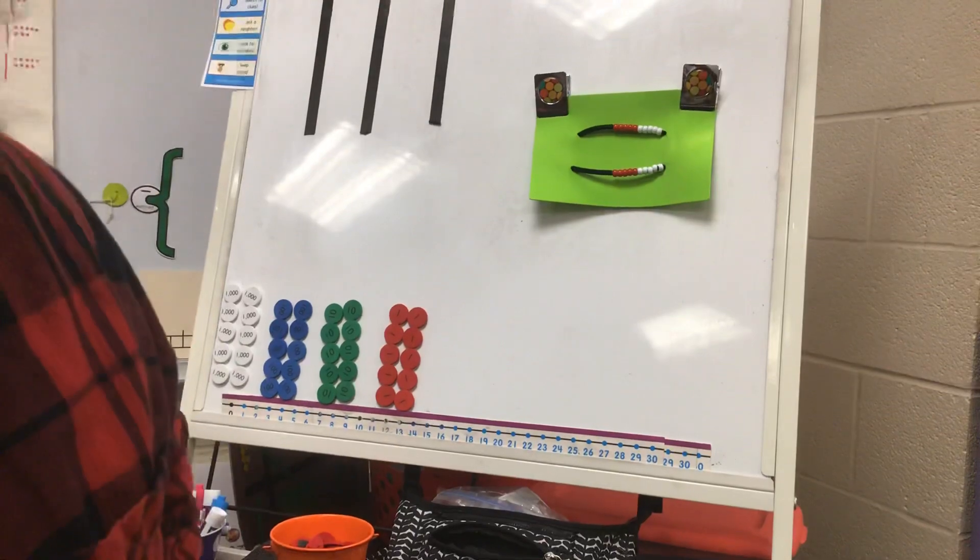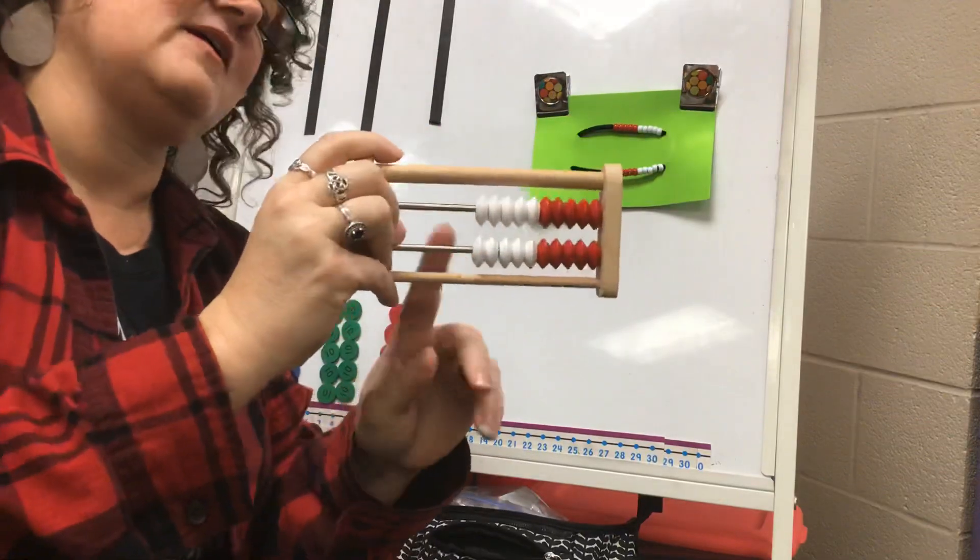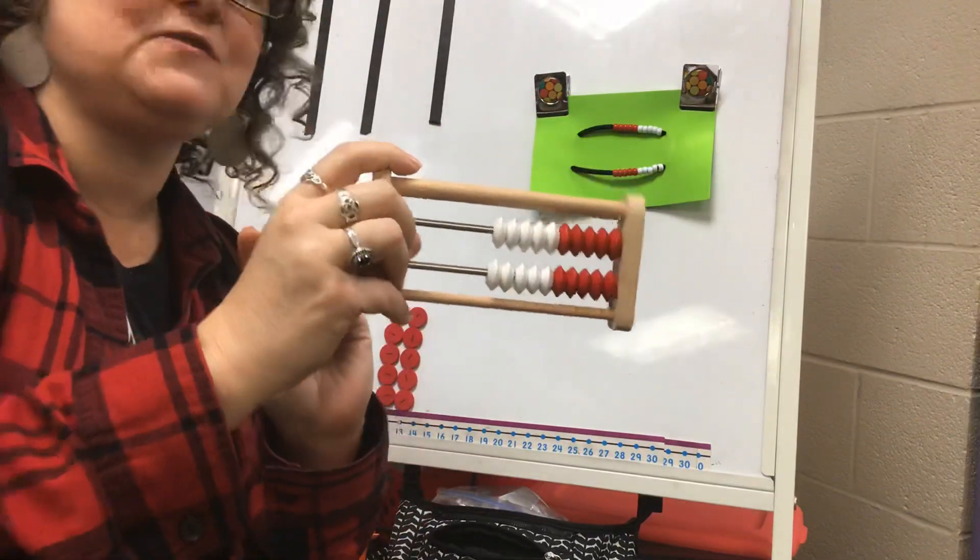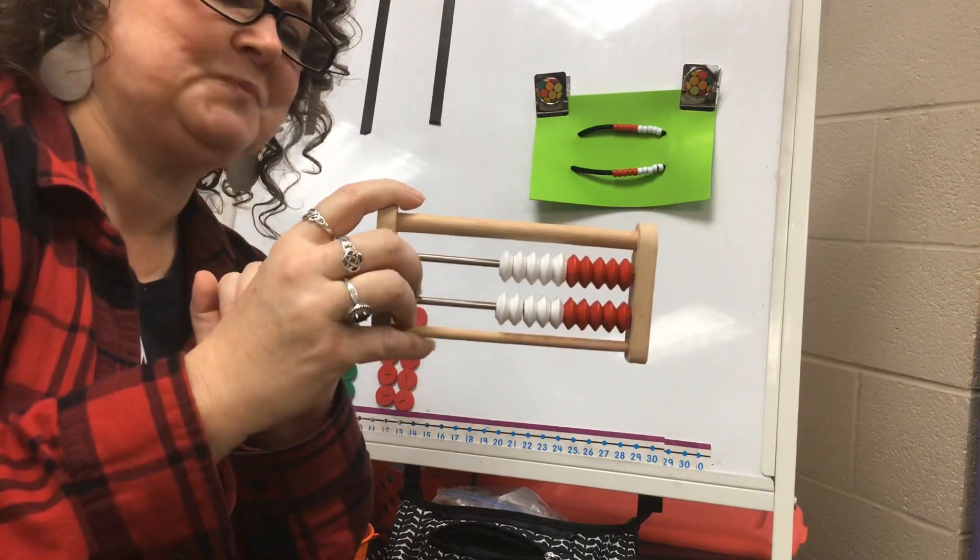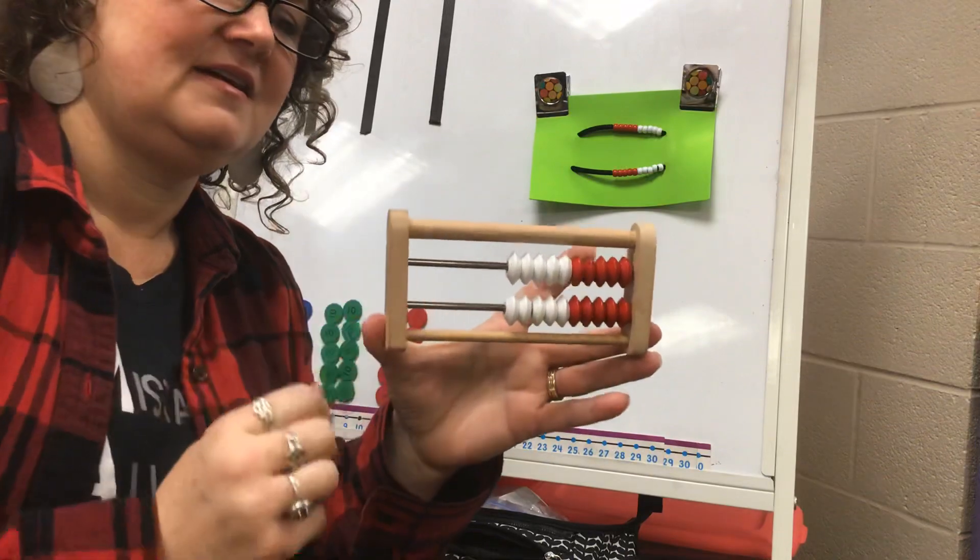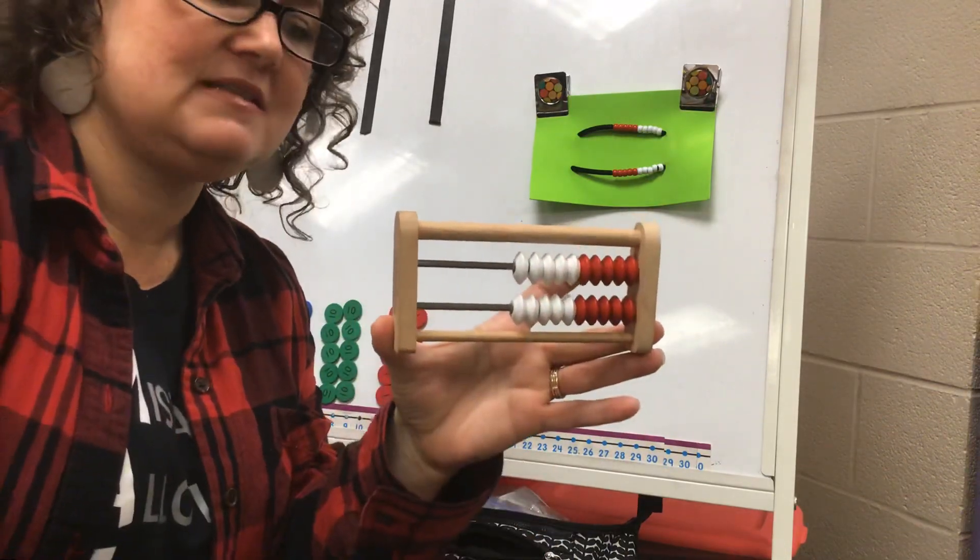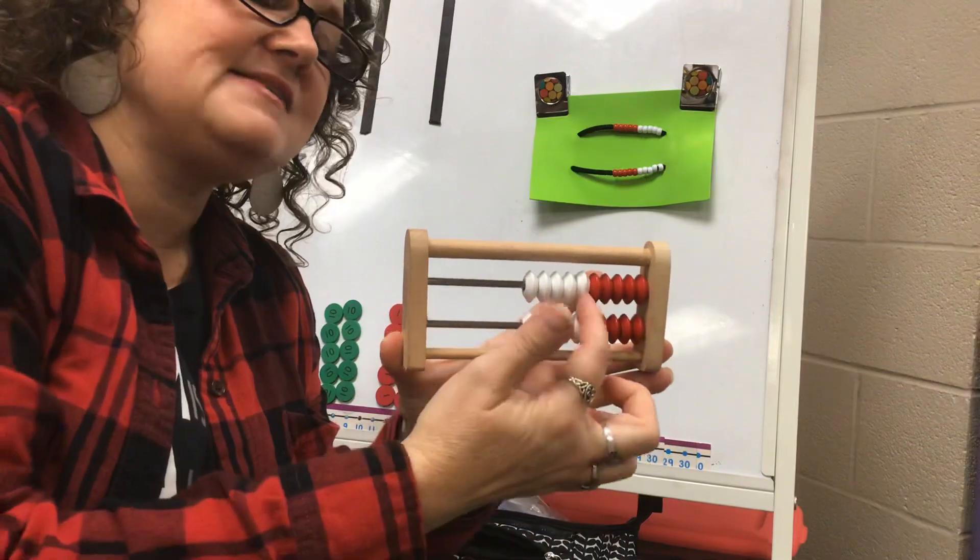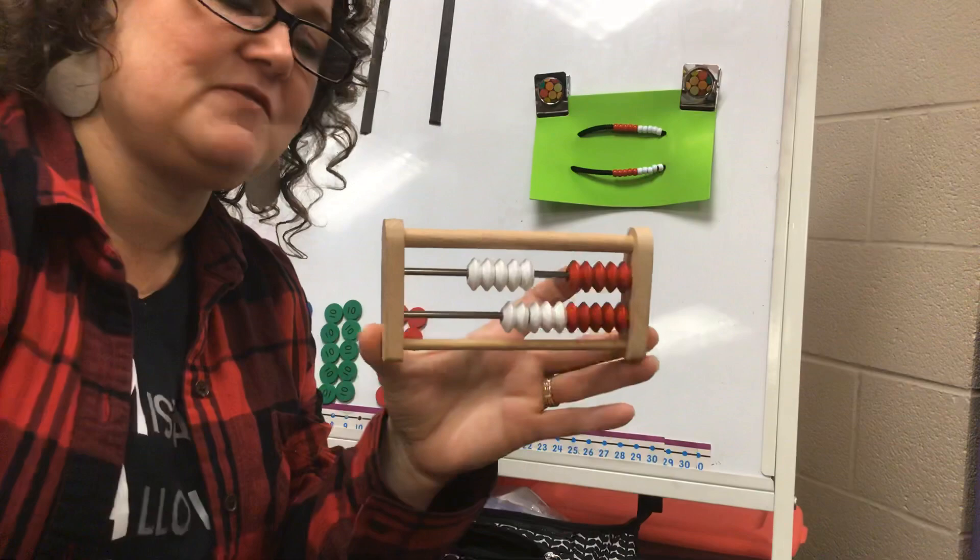When we are at school we use a different kind of Rekenrek. We use one that looks like this. And this Rekenrek, if you'll notice—oh, I'm gonna give you a few seconds—tell each other what you notice about this Rekenrek. Did you notice that it has white and red beads?